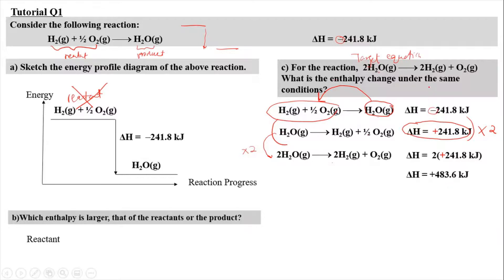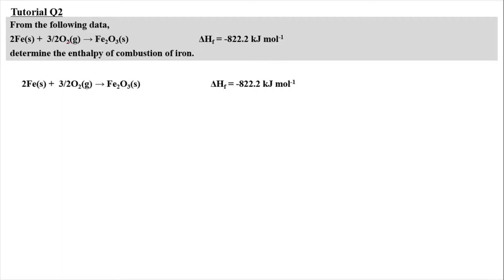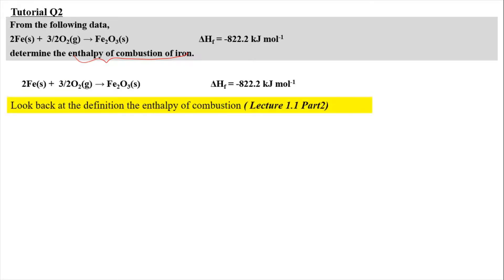The enthalpy change under the same condition for 2 moles of water decomposing to produce 2 moles of hydrogen gas and 1 mole of oxygen gas is +483.6 kJ. For question 2, from the following data — 2 moles of iron solid reacting with 3/2 O₂(g) to produce Fe₂O₃ solid — we need to determine the enthalpy of combustion of iron. We need to look at the definition of enthalpy of combustion from the lecture video.